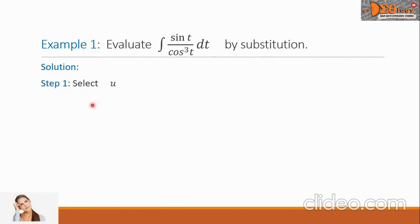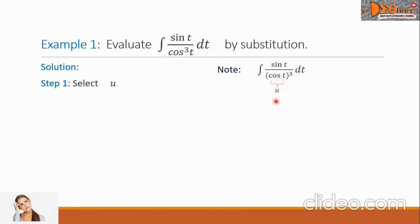For our solution, Step 1 is to select u. Note that cosine cubed of t is the same as cosine(t) with the quantity cubed. Let us choose cosine(t) to be u. Taking the derivative of this equation, we get du equals negative sin(t) dt.